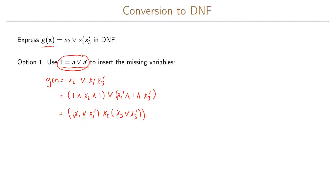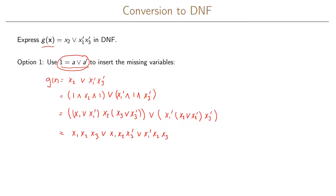We do the same thing for the second expression, writing OR x1' AND (x2 OR x2') AND x3'. Now we use the distributive law to expand, giving us x1x2x3 OR x1x2x3' OR x1'x2x3 OR x1'x2x3'. This finishes the expansion of the first part of our expression.